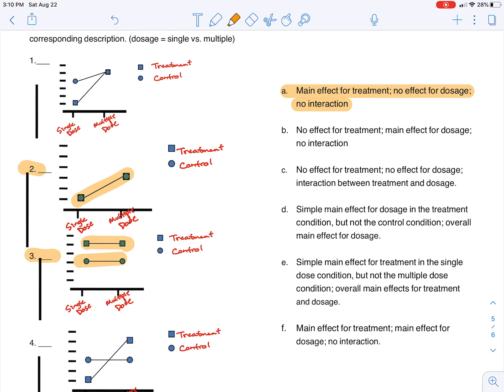Next, we're looking for a main effect for treatment. So what that means is, on average, our squares are going to be separate from our circles, or the average point, the midpoint of our squares is going to be separate from our circles.